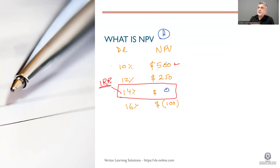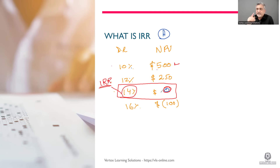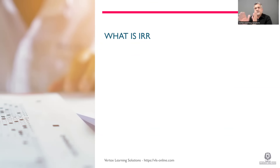That is why we use IRR. IRR — internal rate of return — is the point where NPV becomes zero. For this project, 14 percent is the IRR. IRR is actually the real rate of return. When IRR is 14 percent, it means this project is actually giving you the same return as a 14 percent investment. So IRR is the real, direct rate of return from a project. If someone asks what this project gives you, you say its IRR is 14 percent — it is giving me 14 percent.